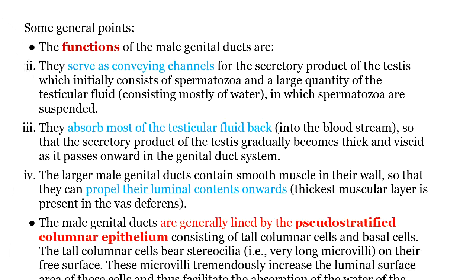Any duct would serve as the main channel, so it serves as a conveying channel for the secretory product of the testes. The secretory product of the testes — we should know from our knowledge of the histology of testes discussed in the last lecture — is obviously spermatozoa, which are produced by the testes. But spermatozoa are suspended in a testicular fluid which is secreted by the Sertoli cells. Spermatozoa are produced from the spermatogenic cells, and testicular fluid is secreted by the Sertoli cells. Quite large, copious amounts of testicular fluid, which consists mostly of water but also some dissolved substances, leave the testes.